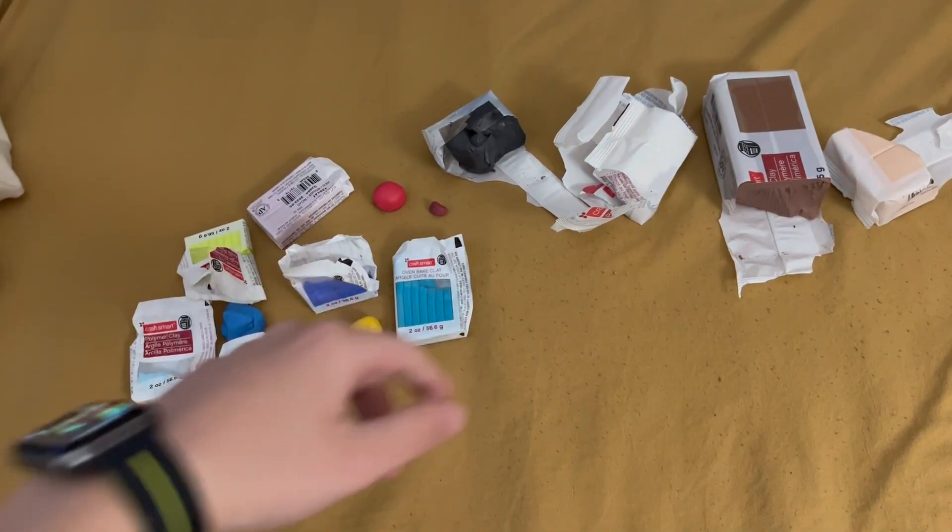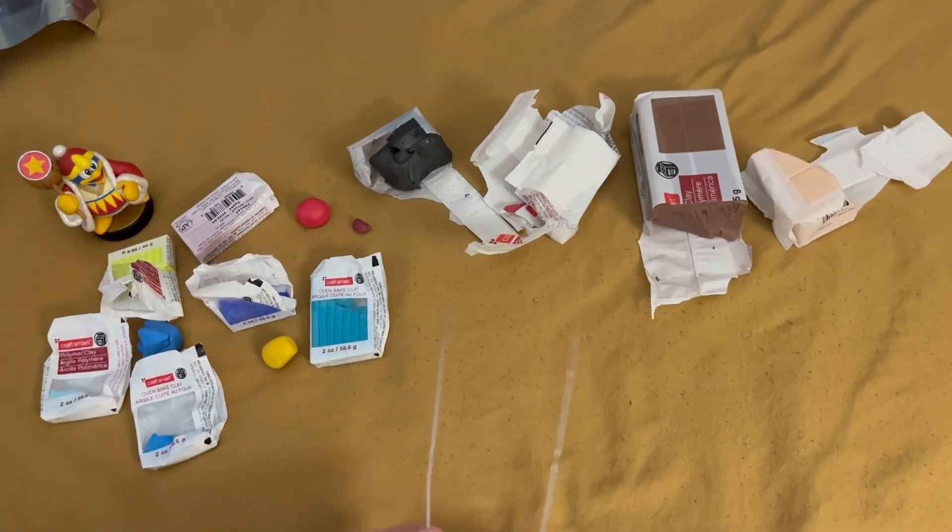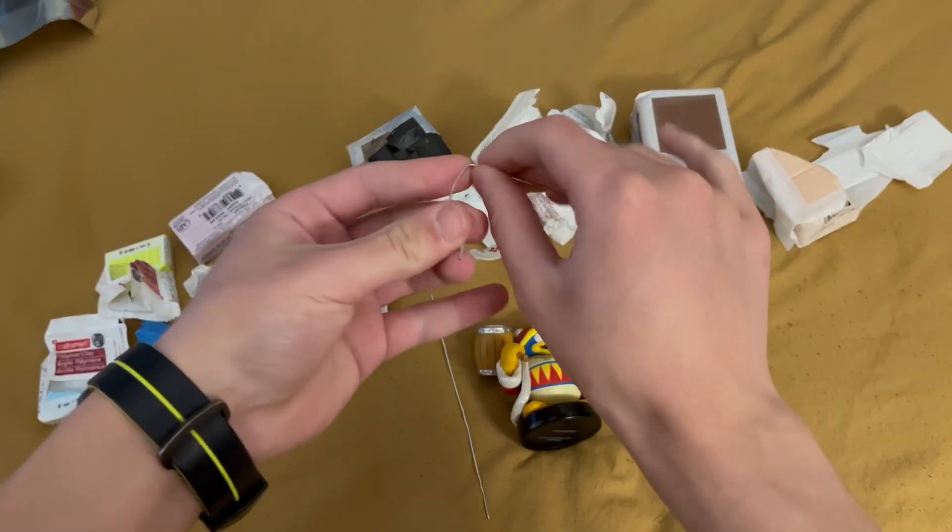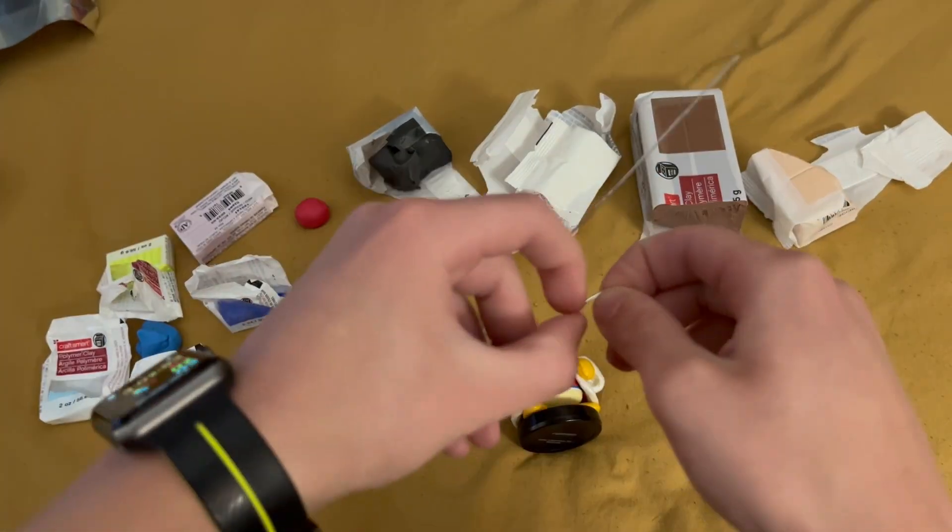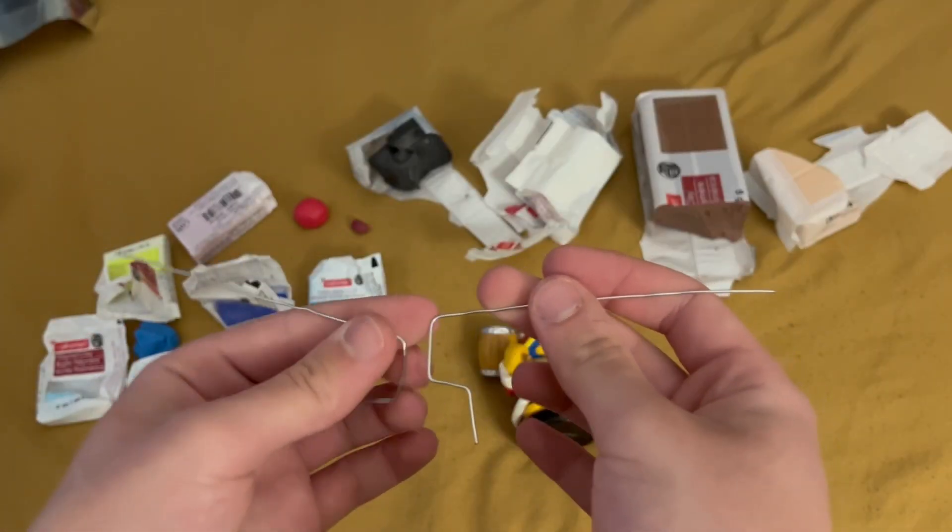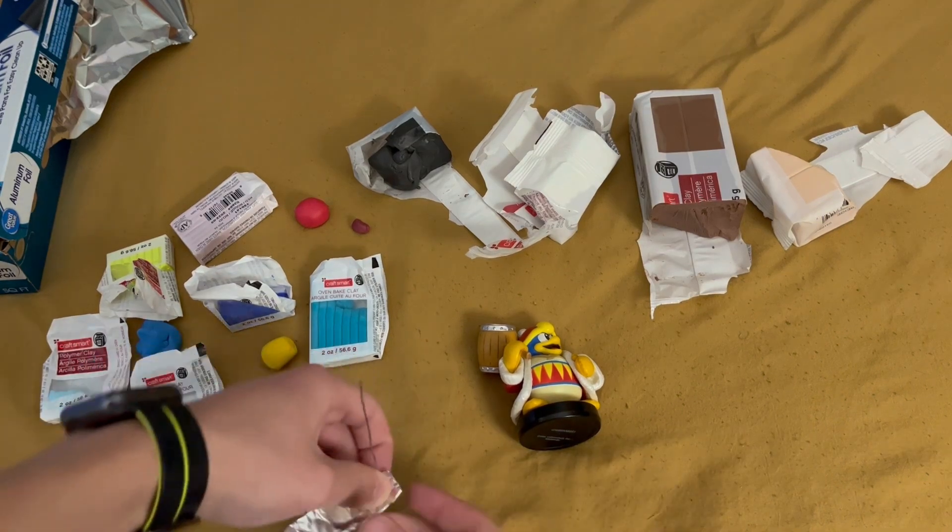To start making El Primo, I first bend some paper clips into straight lines of wire so that I can make an armature. This armature is to whatever I feel is a similar scale to the character, and then once I get it bent so that there are obvious legs and arms, I connect them together with some aluminum foil.